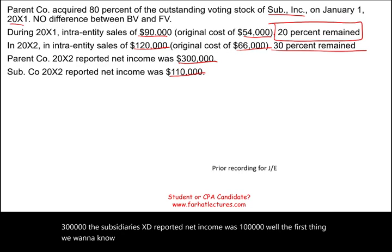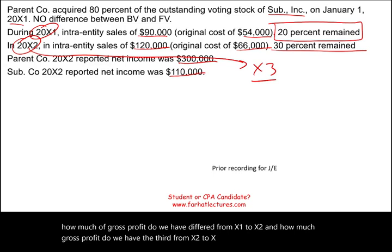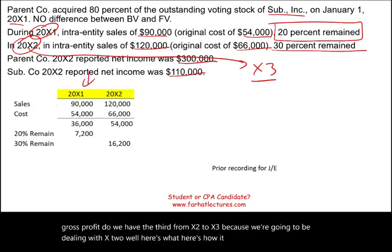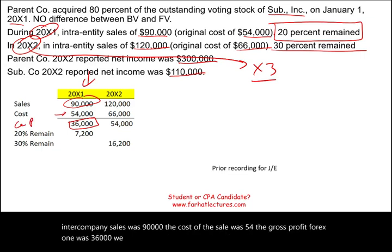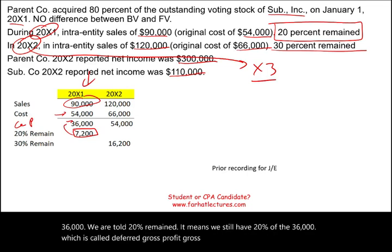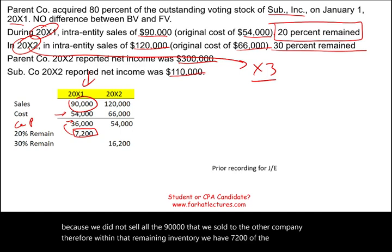We want to know how much gross profit is deferred from X1 to X2, and from X2 to X3, since we're dealing with X2. In X1, intercompany sales were $90,000 with a cost of $54,000, giving gross profit of $36,000. Since 20% remained unsold, the deferred gross profit is 20% of $36,000, which equals $7,200. This deferred gross profit carries forward into X2.